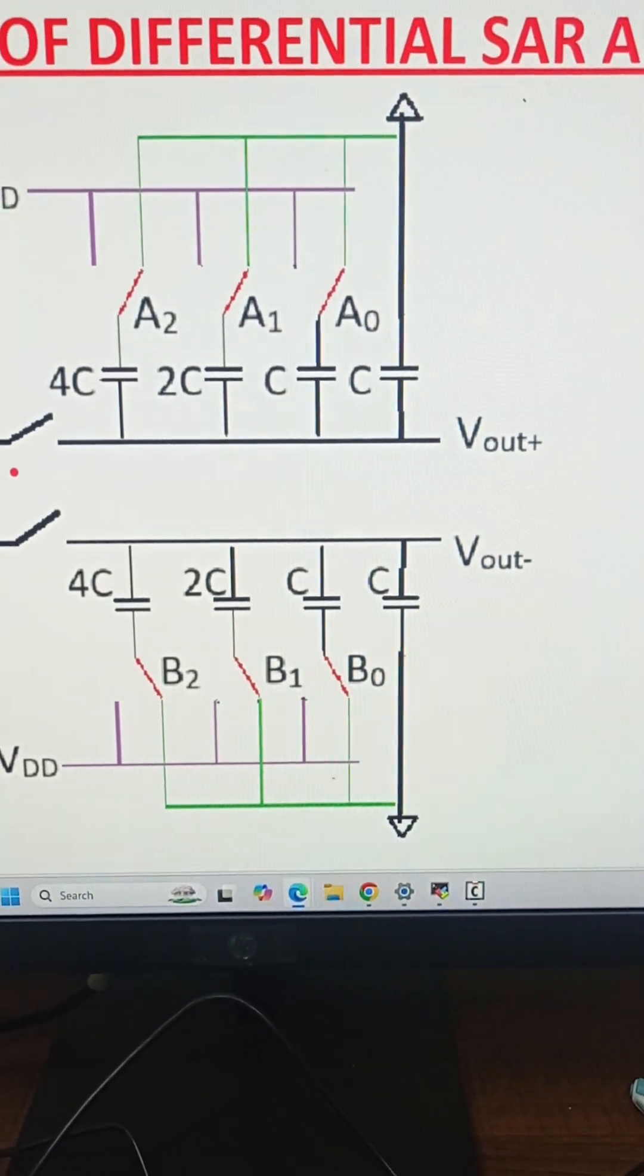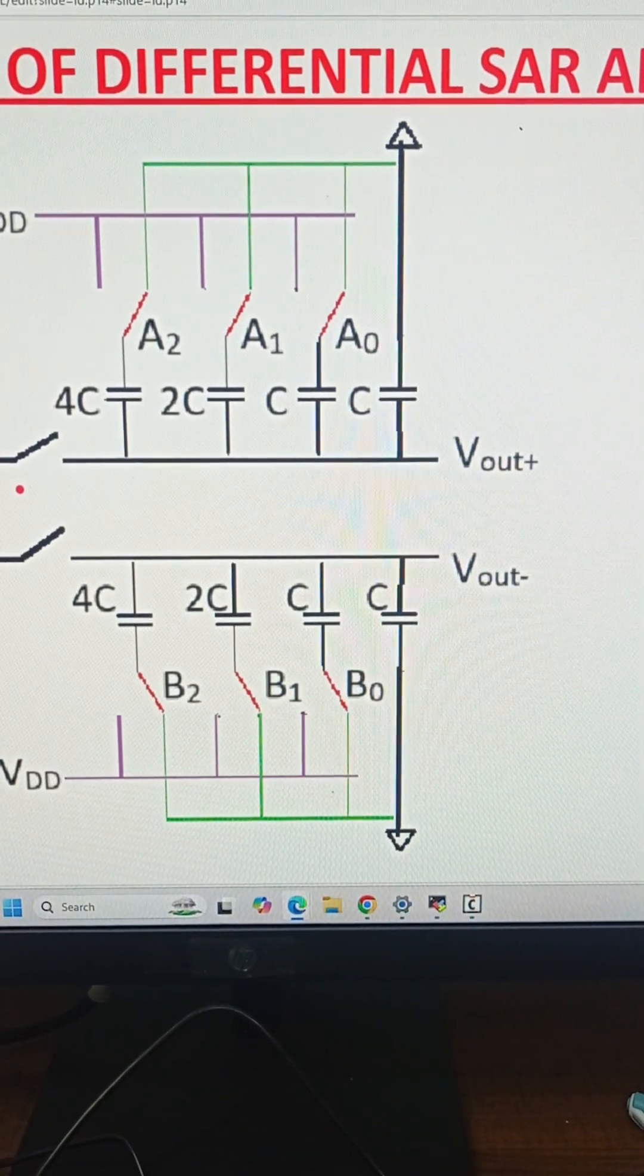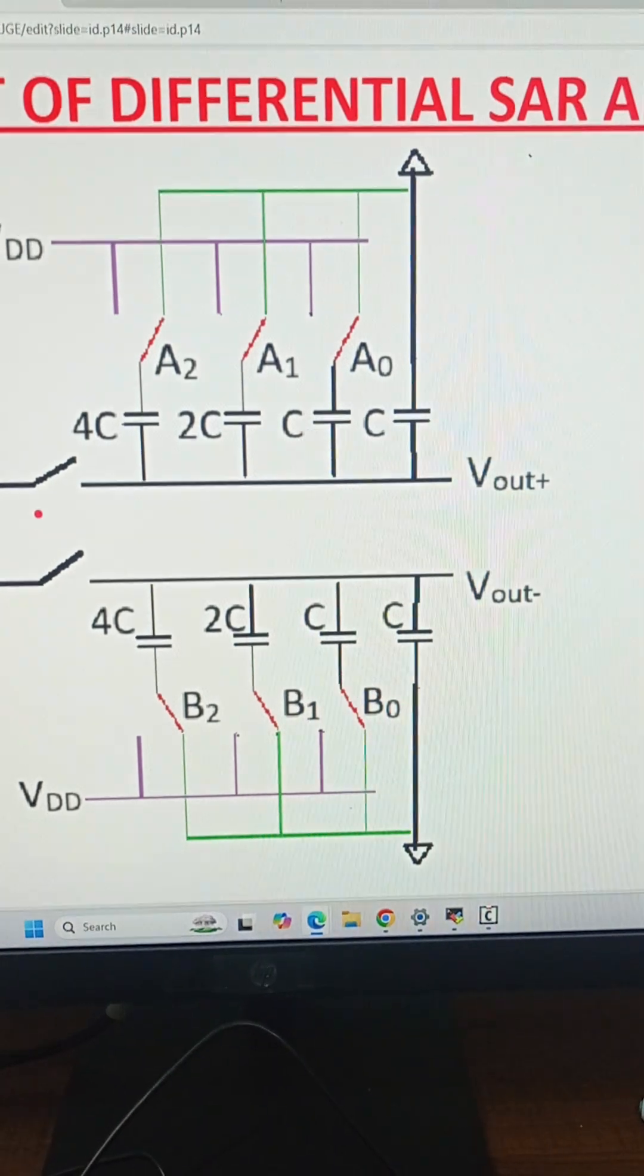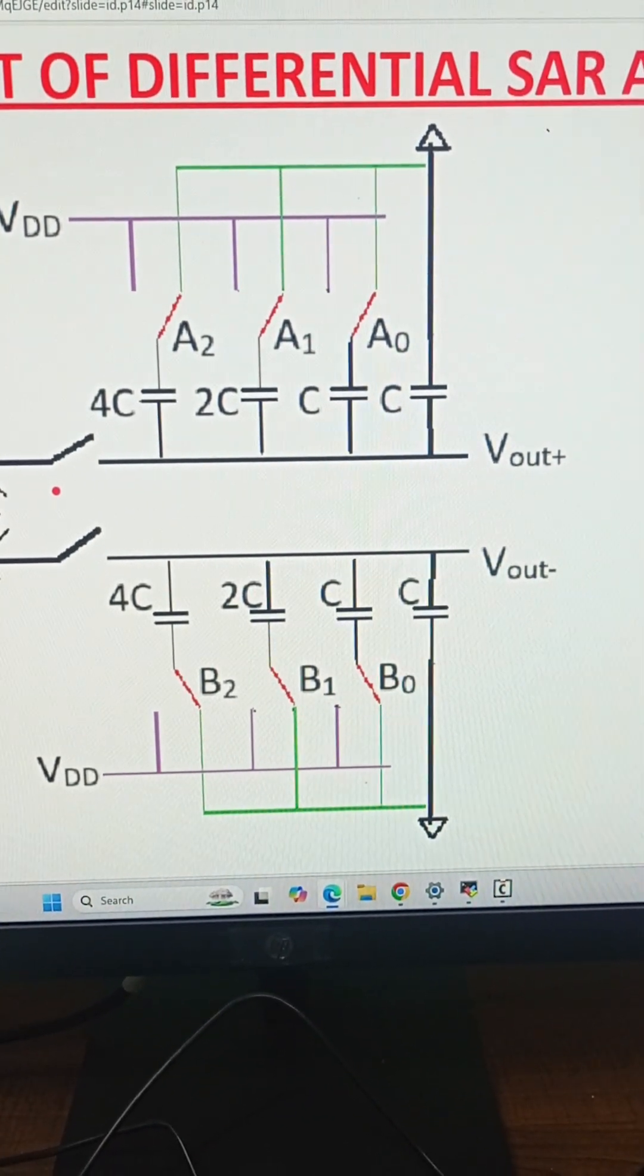In the final step, V_out+ is greater than V_out-. The fourth bit will be resolved as 1. The final output will be 1001. This is the concept of differential SAR ADC. Thank you.